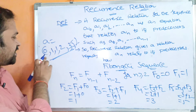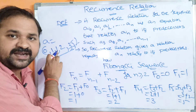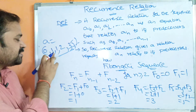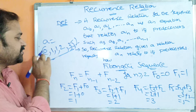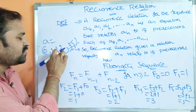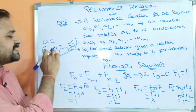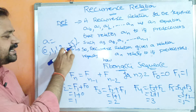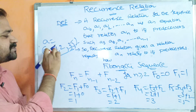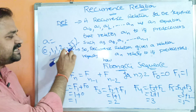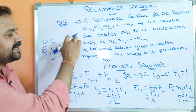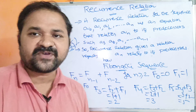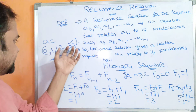The first two numbers are 0 and 1. We get the next number by adding its previous two numbers: 0 + 1 = 1. Then by adding previous two items: 1 + 1 = 2. Next: 2 + 1 = 3. Next: 3 + 2 = 5. Likewise, we will get n number of items. So this is the sequence.